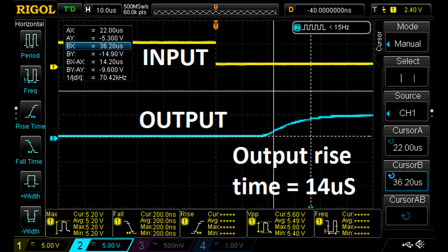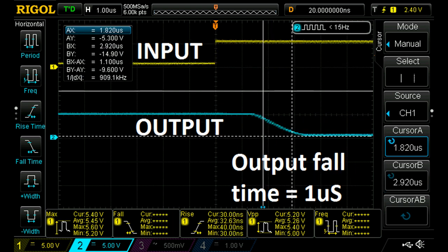It's also worth noting the difference in the rise and fall times of the outputs. When the LED gets shut off and the output rises back up the rise time is very slow, but when the LED gets actively driven the output gets driven fairly quickly as well.